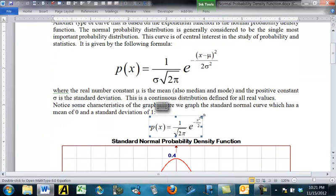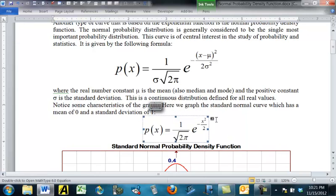So let's look at a graph here. Here's what's called a standard normal, when you have mu of 0 and sigma is 1, so the formula reduces to this: 1 over the square root of 2 pi times E to the minus x squared over 2.